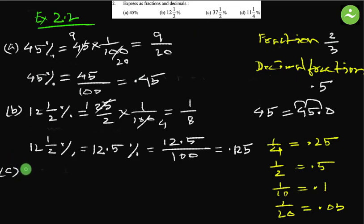Now see 37 and half percent. First we have to express as fraction. 37 and half means 37 multiply 2, this will be 74 plus 1, 75.